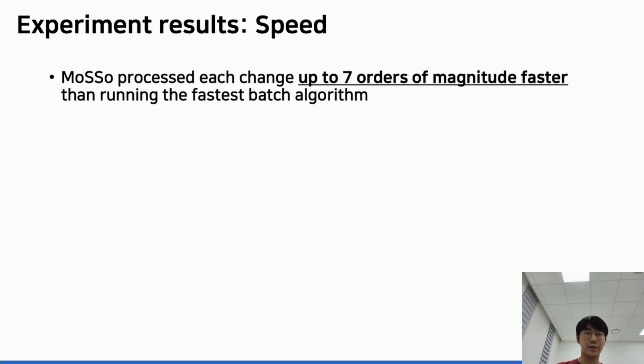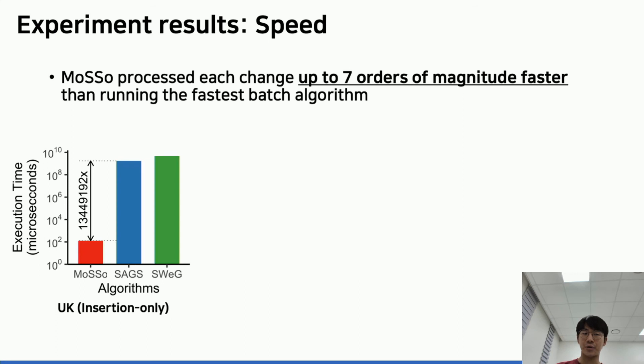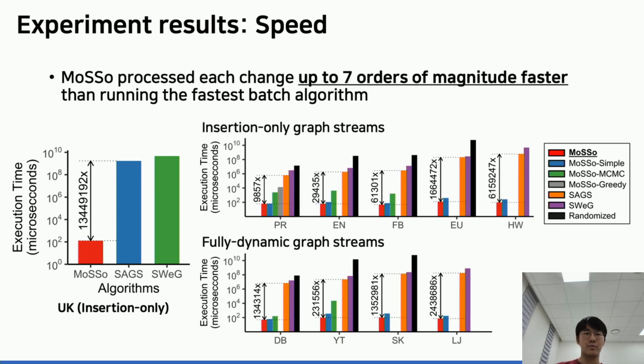First, we measure the runtime of all baseline and our algorithms. Compared to the fastest batch algorithm SHS, our algorithm MoSso processed each change up to 7 orders of magnitude faster on both insertion-only and fully dynamic graph streams. Also, MoSso processed each change up to 2 orders of magnitude faster than the streaming baselines.